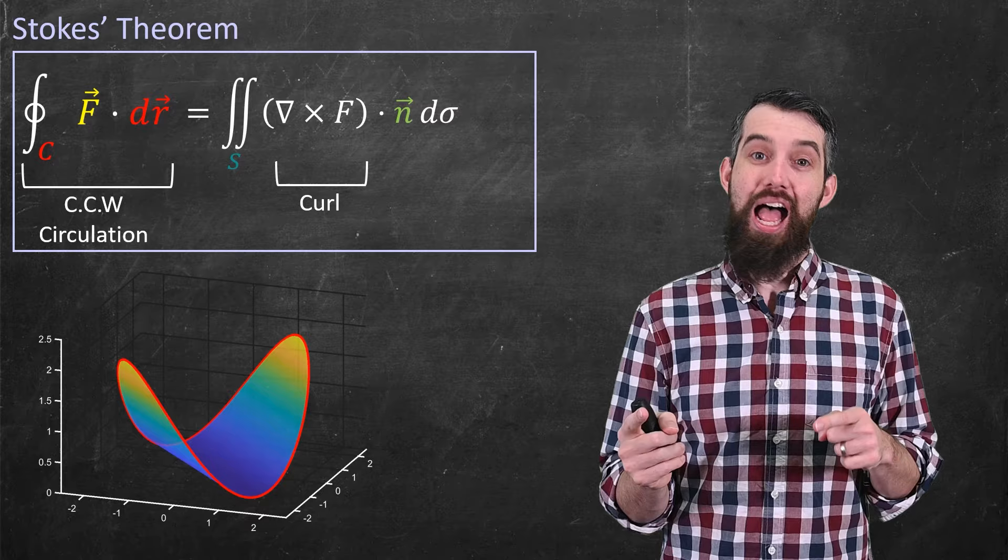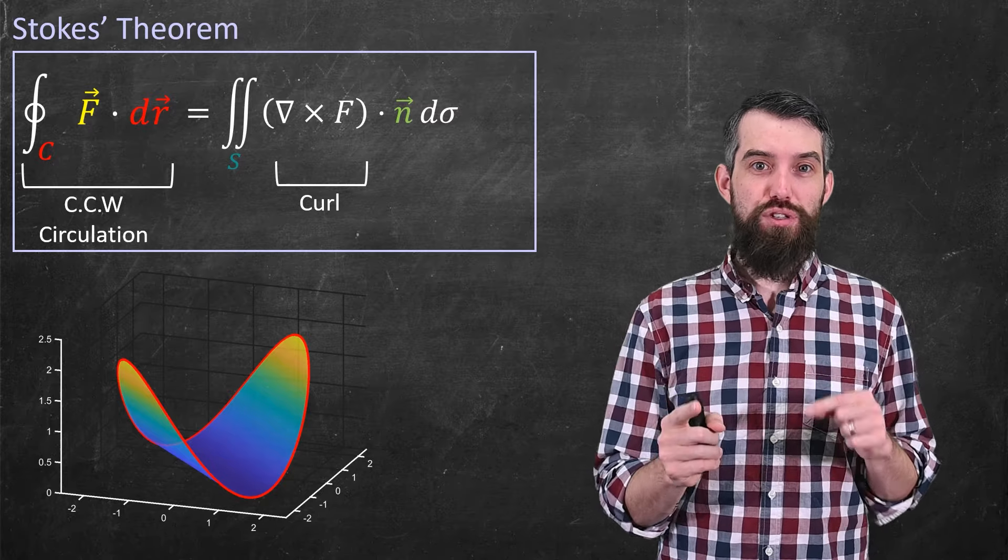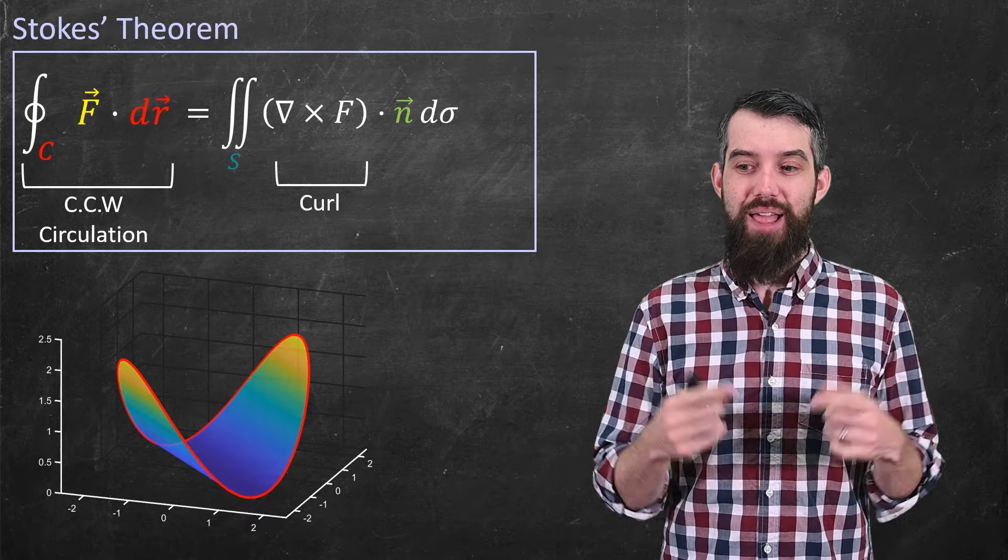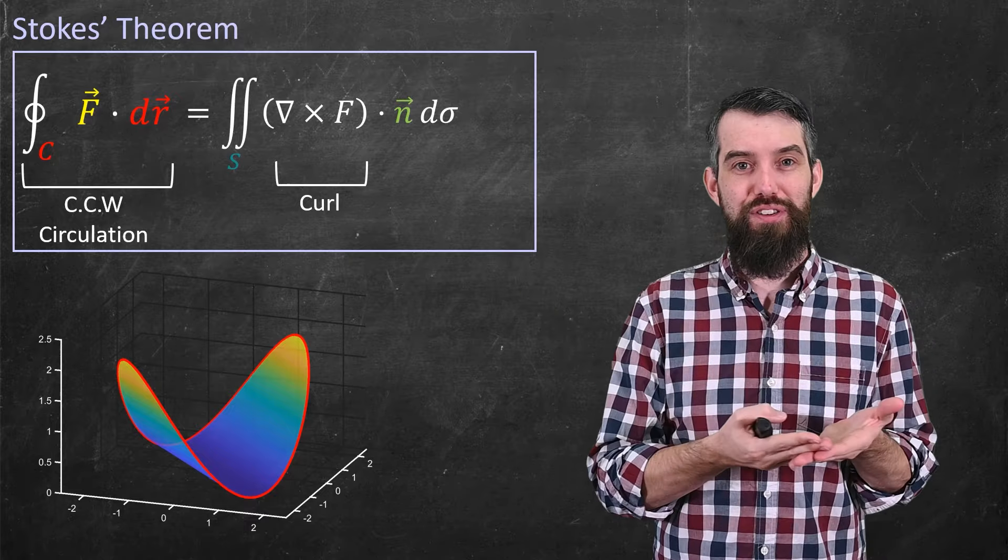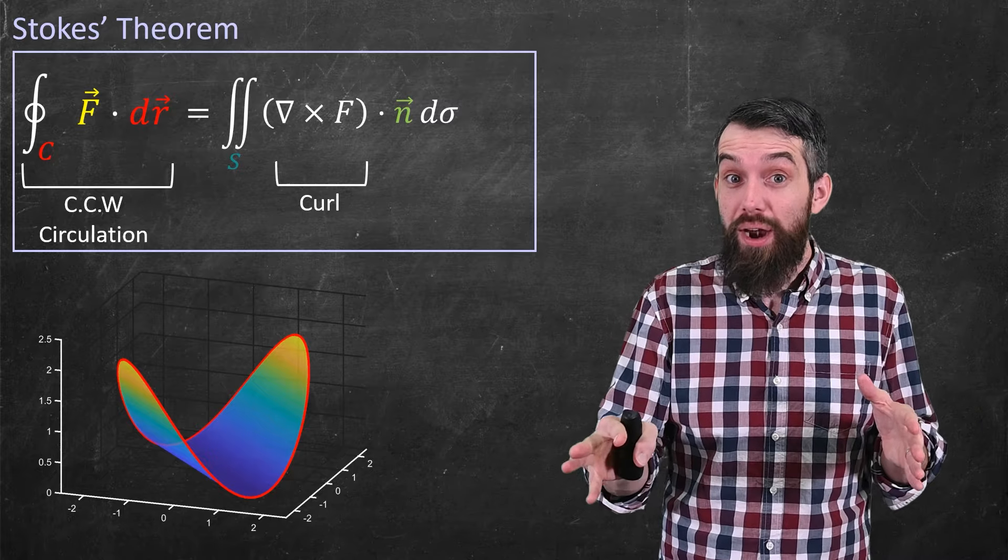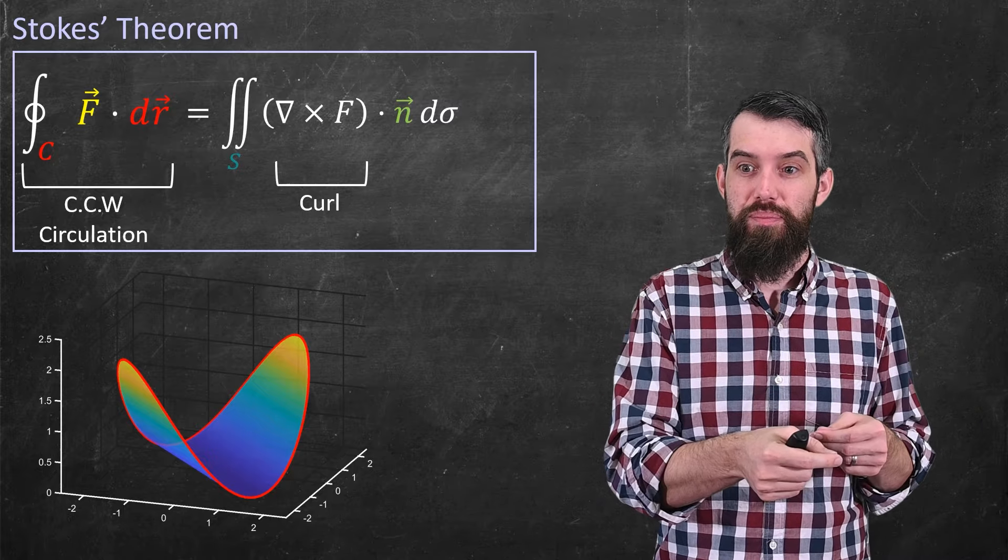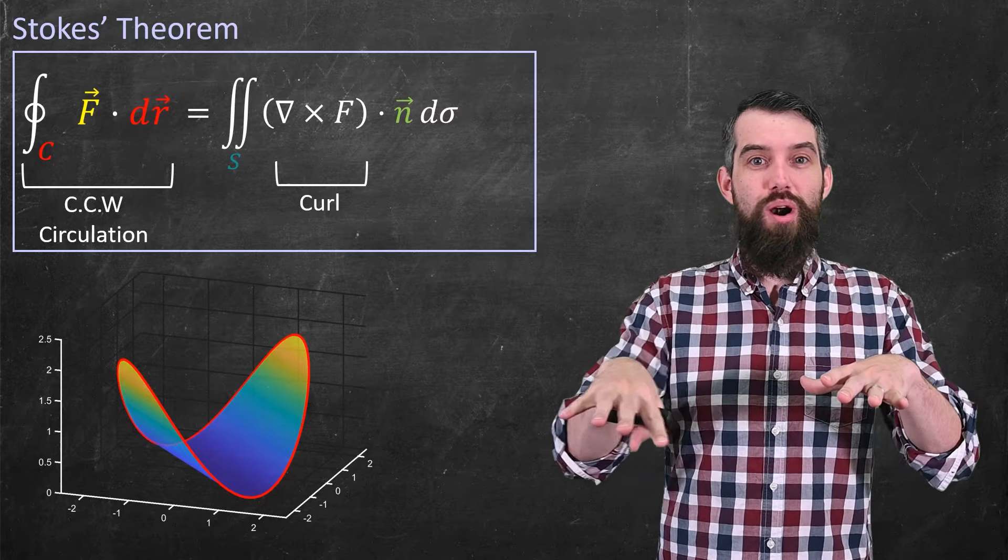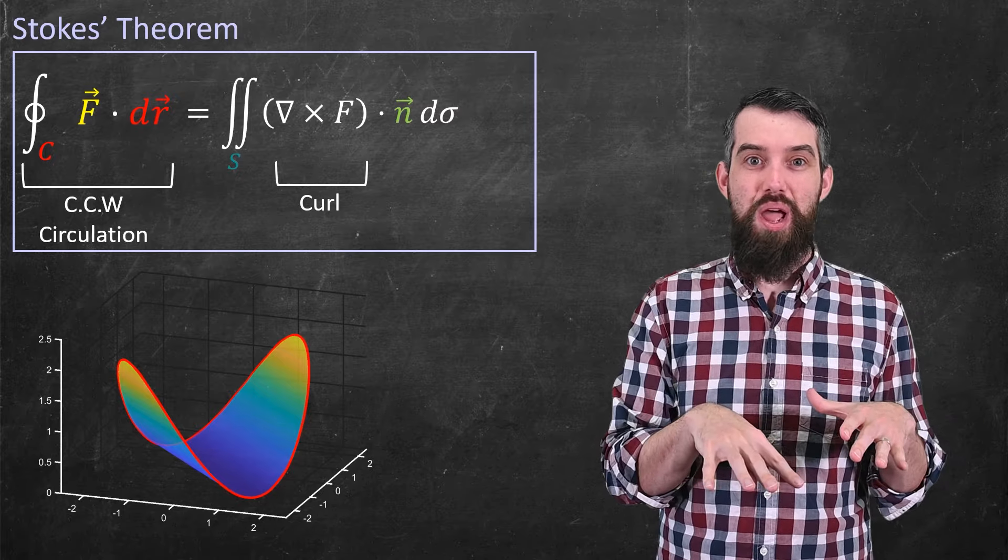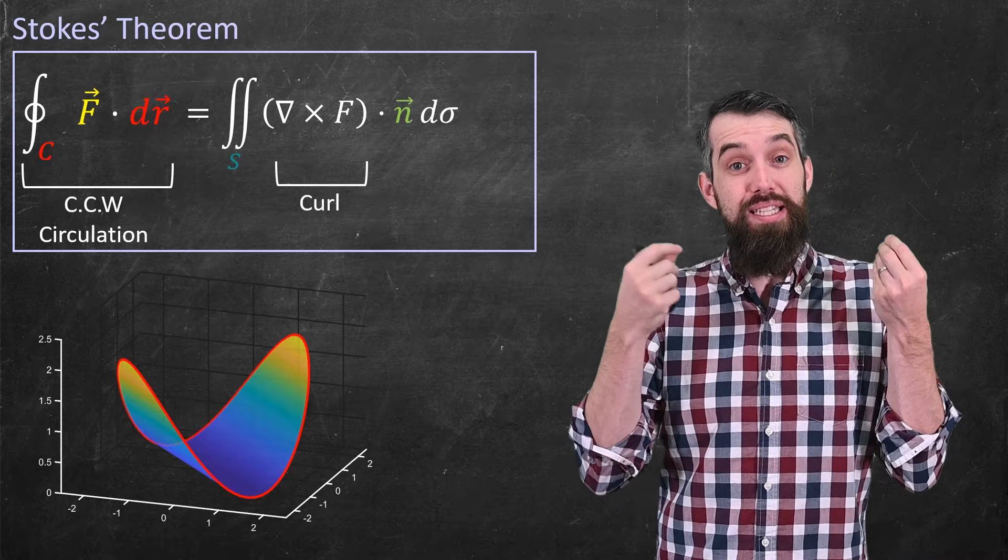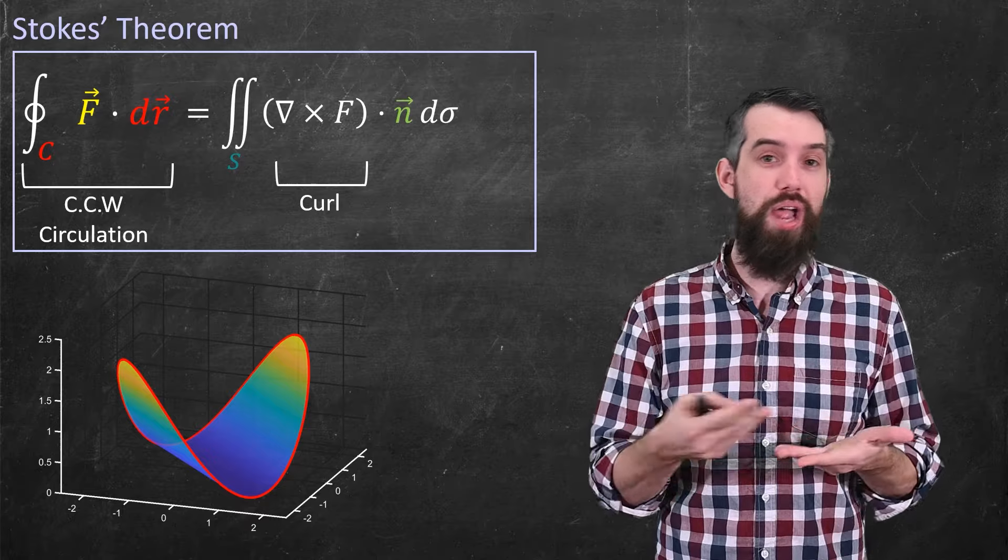And then on the right-hand side, a couple things have changed. First of all, instead of being the curl dotted with k hat, it's the curl dotted with the normal vector. And that's because as you move to different places on your surface, your normal vectors are different things. It's not just k hat everywhere, the way it was for Green's Theorem. And the second thing that's changed is that instead of in Green's Theorem, where I was taking a little area down in the xy-plane, this is now a surface integral. It's an integral dσ, as opposed to dx dy or da, as we would have had before.